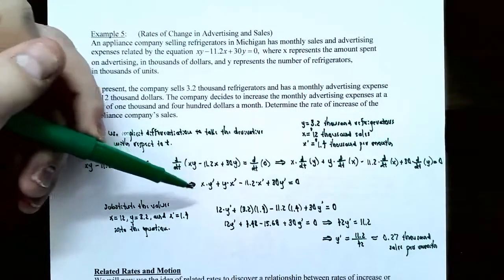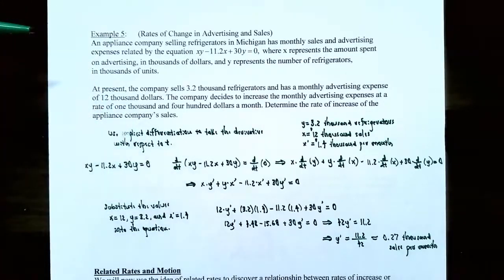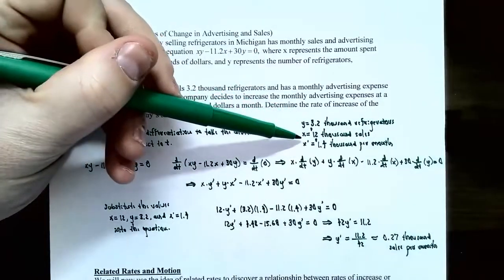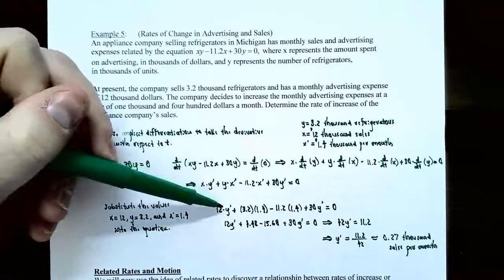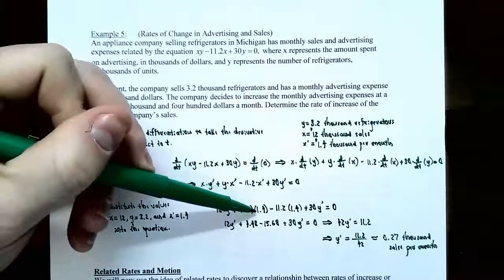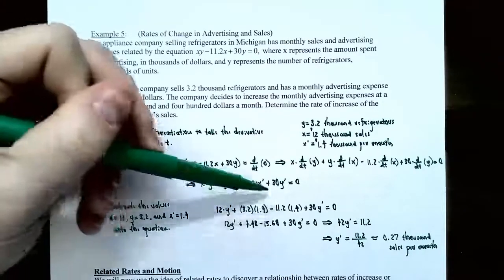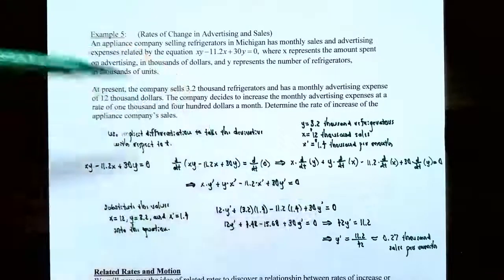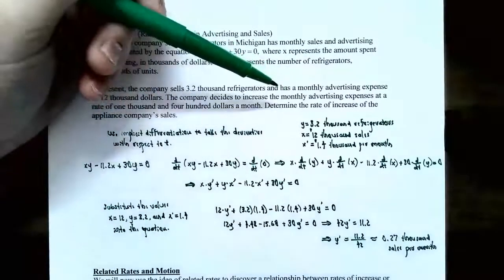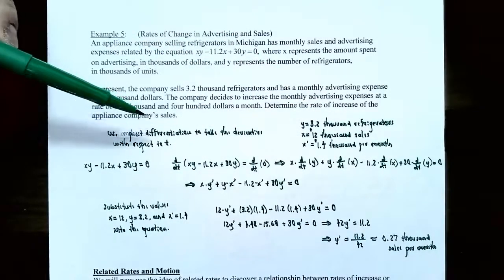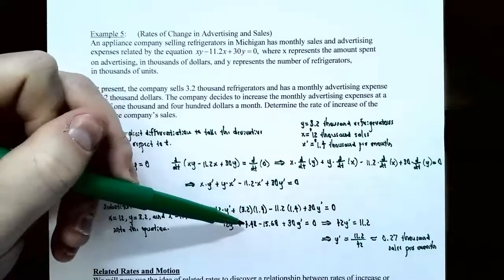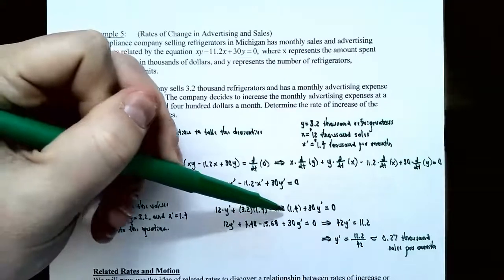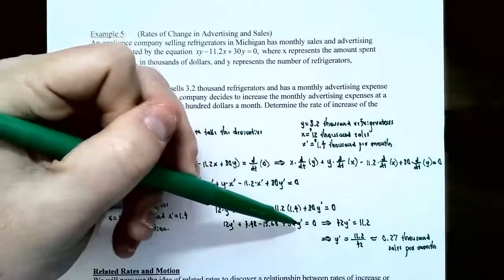Now plug in the given values: y equals 3.2, x equals 12, and x prime equals 1.4. Substituting: 12 times y prime plus 3.2 times 1.4 minus 11.2 times 1.4 plus 30 times y prime equals 0. Y prime is what we're trying to find — the rate of increase of refrigerator sales.